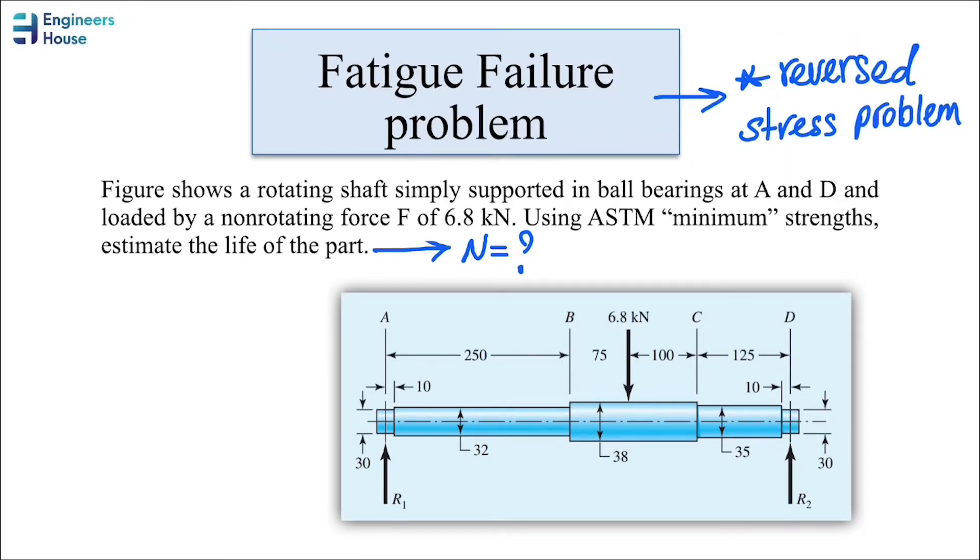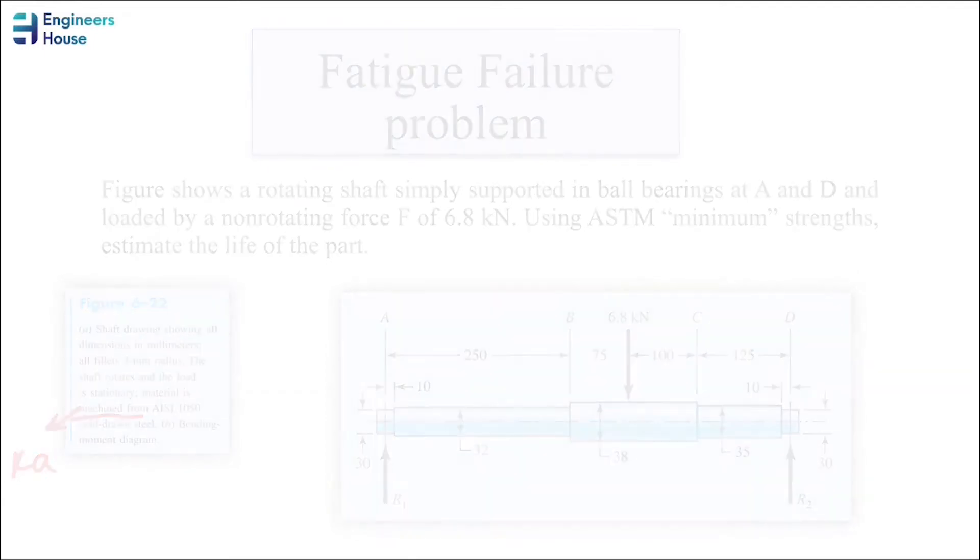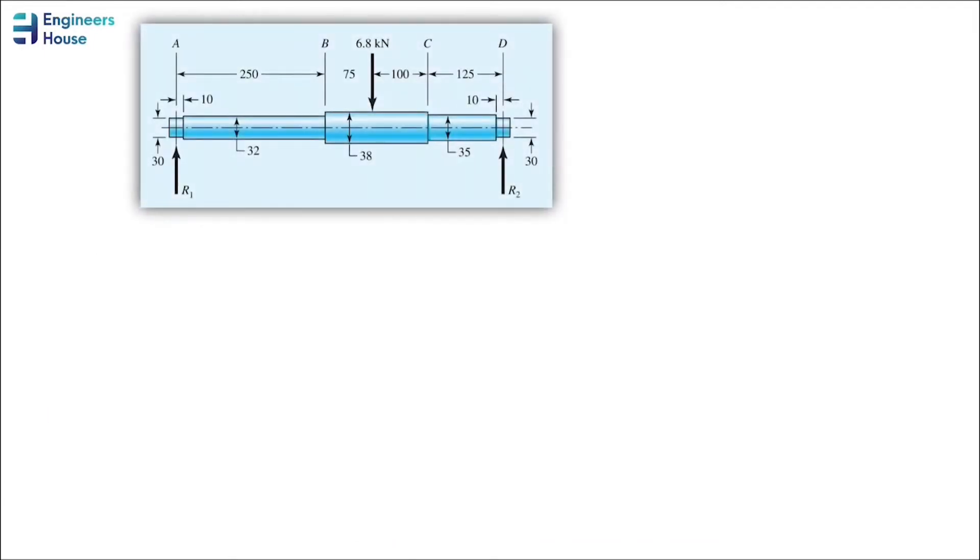Now that we know this is a reverse stress problem, we can solve it much easier. The question has also given us some information about the material and the surface condition. The material is mentioned here, and we know that the material is machined. Having this machined surface will help us estimate the factor Ka, which I mentioned previously. We have the material.